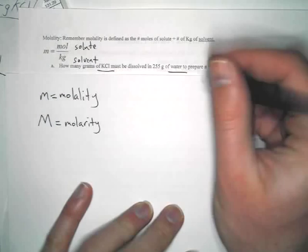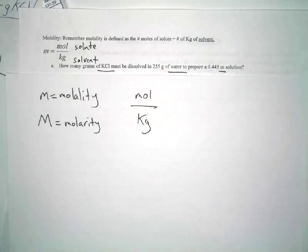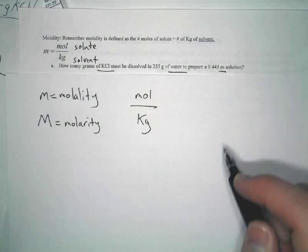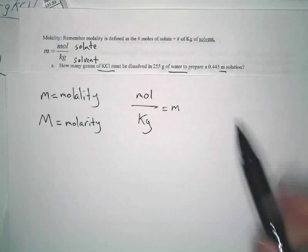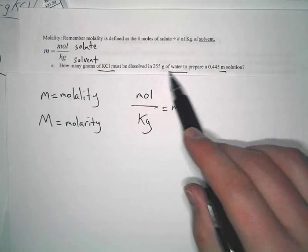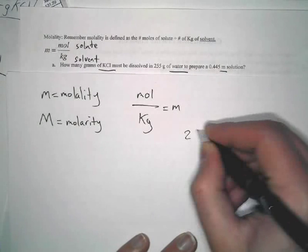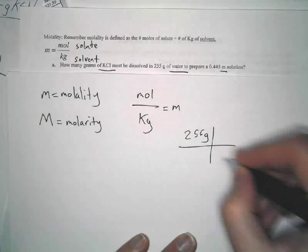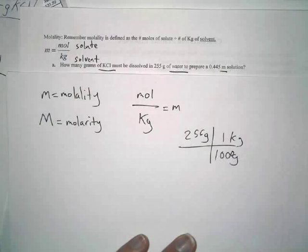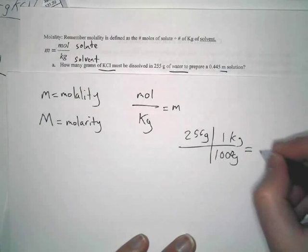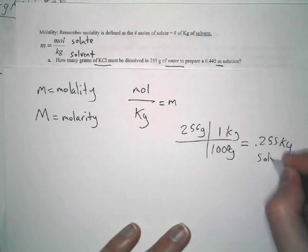So, all you're going to do, we need to have moles over kilograms. Now, the question is, we have 255 grams of water. That's our solvent. So, we can convert 255 grams to kilograms pretty easily. You could really just move the decimal over three spots and you get 0.255 kilograms of your solvent.